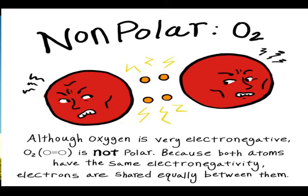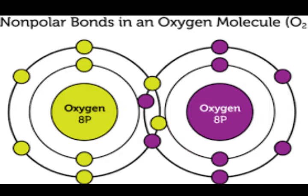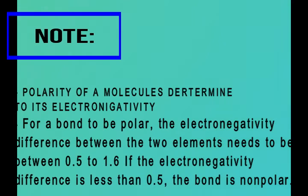An example of a non-polar molecule is oxygen (O₂). Although oxygen is very electronegative, it is not polar because both atoms have the same electronegativity, so electrons are shared equally between them. In summary, polar bonds are very greedy, while non-polar bonds are stable and evenly shared. That's it for today — I hope you understand what is polar and non-polar.